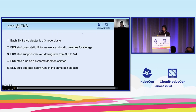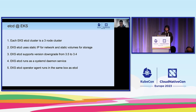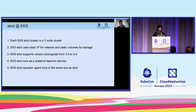Now let's hear from Chao about our etcd environment. My name is Chao, a software engineer at Amazon. I've been actively working in the operation of etcd, the distributed key-value store that is used by Kubernetes as its primary data store. In my virtual talk today, I'll be sharing some of my experiences and insights of operating etcd in Kubernetes clusters.